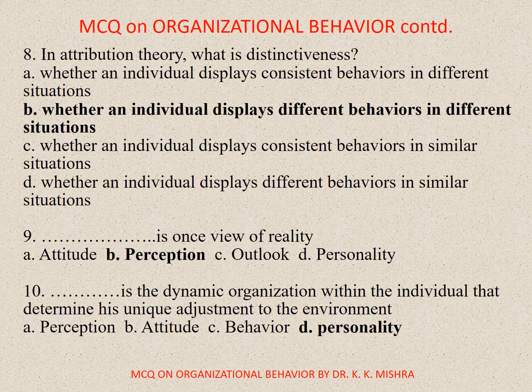Question 8. In attribution theory, what is distinctiveness? A. Whether an individual displays consistent behaviors in different situations, B. Whether an individual displays different behaviors in different situations, C. Whether an individual displays consistent behaviors in similar situations, D. Whether an individual displays different behaviors in different situations. Correct option is B. Whether an individual displays different behaviors in different situations.